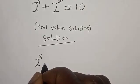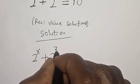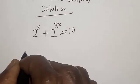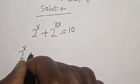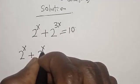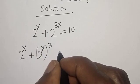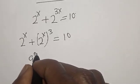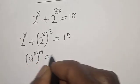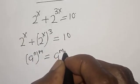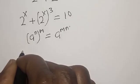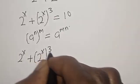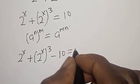2 raised to power x plus 2 raised to power 3x is equal to 10. Now, 2 raised to power x plus 2 raised to power x, raised to power 3, is equal to 10. That is, using the rule a raised to power n raised to power m equals a raised to power mn. So 2 raised to power x plus 2 raised to power x cubed minus 10 is equal to 0.